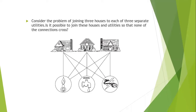The problem is: is it possible to join all these houses and utilities so that none of these connections cross? In this figure, we can see that all the connections are crossing at many places, so we need to redraw this problem in such a way that the connections do not cross each other.